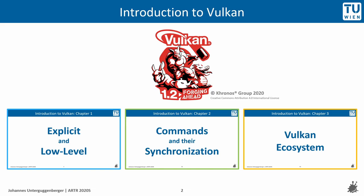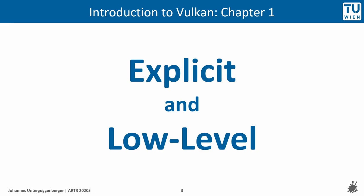In the first chapter, we will see that Vulkan is a very explicit API — a lot of things have to be specified by the developer that were implicitly performed by other APIs. Since Vulkan is a low-level API, stating things explicitly and precisely is the point of using it. In the second chapter, we will take a deeper look at command submission and synchronization, which is probably one of the most complicated yet powerful aspects of Vulkan. Finally, we will briefly look at Vulkan's ecosystem in the third chapter. Let's start with chapter 1: an explicit and low-level graphics API.